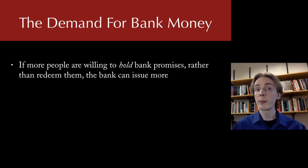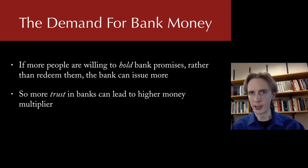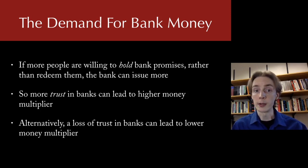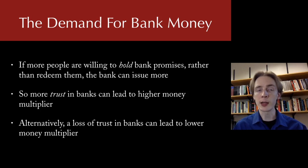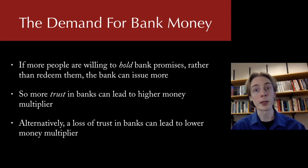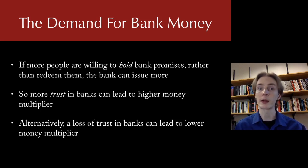The second factor determining how much money banks can issue is the demand to hold those bank promises. The more willing people are to hold bank promises rather than redeem them, the more promises the bank can issue. The bank is able to issue more promises than it has reserves because not everybody is redeeming at once. So the more people are willing to hold bank promises rather than redeem them — just keeping money in their bank accounts — the more promises banks can issue and the more loans they can make. The more you trust the bank, the more the bank can issue. The money multiplier can actually fall if people lose trust, or increase if trust rises.